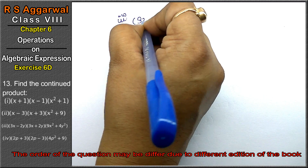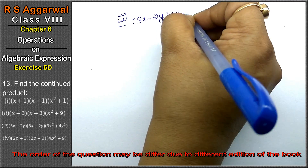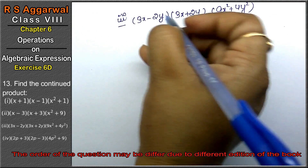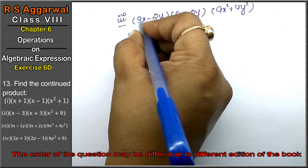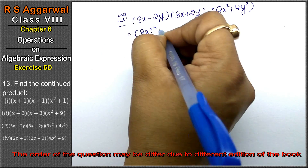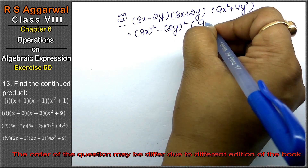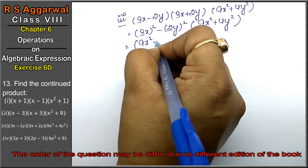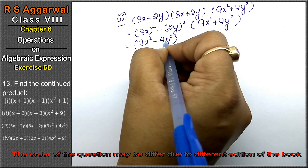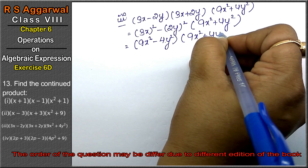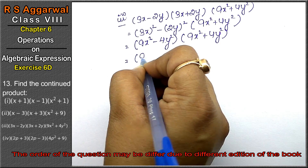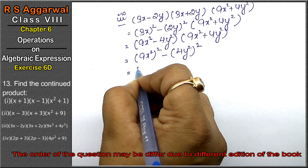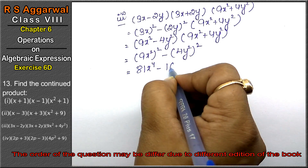Third part: (3x - 2y)(3x + 2y)(9x² + 4y²). Here a = 3x and b = 2y. So (a - b)(a + b) = a² - b² = 9x² - 4y². Then (9x² - 4y²)(9x² + 4y²) = (9x²)² - (4y²)² = 81x⁴ - 16y⁴, which is the answer.